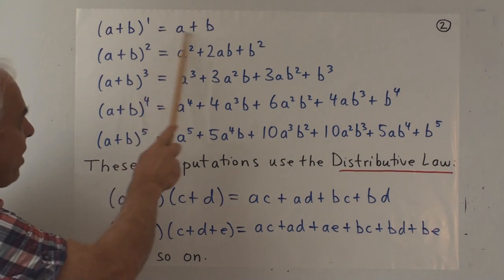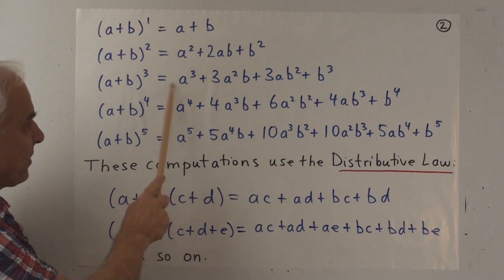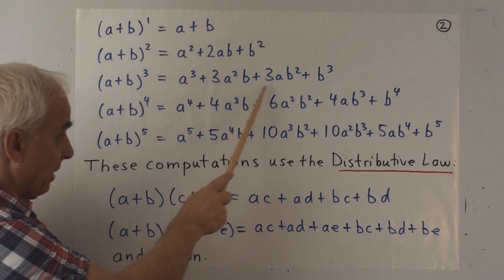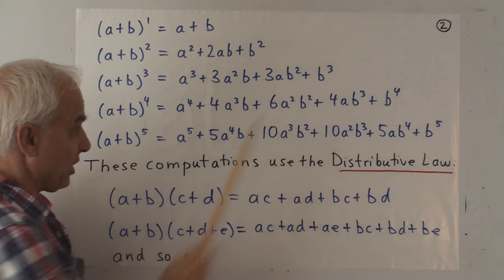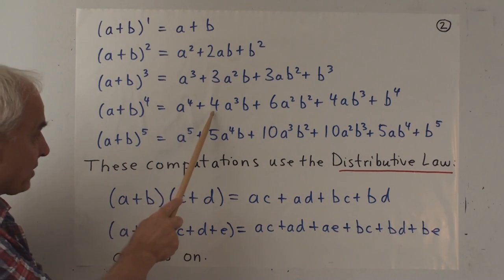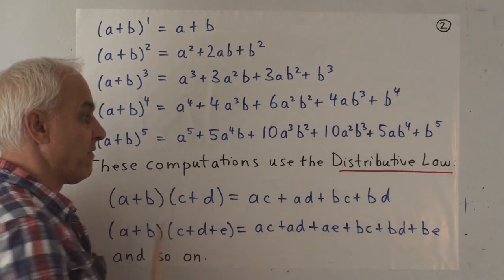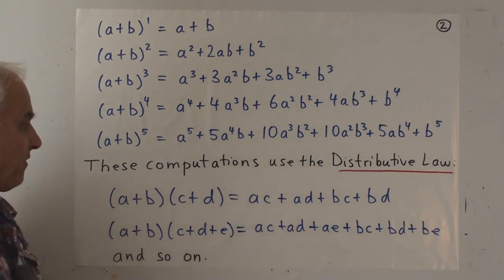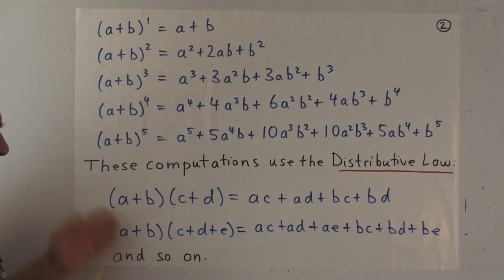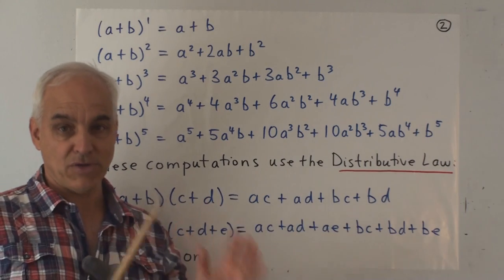So here is a plus b to the 1, a plus b squared we've already seen. Here is a plus b cubed, a cubed plus 3a squared b plus 3ab squared plus b cubed. a plus b to the 4th is a to the 4th plus 4a cubed b plus 6a squared b squared plus 4ab cubed plus b to the 4th. And there is a plus b to the 5th.